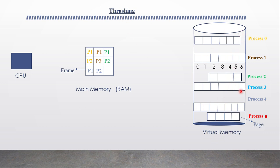Here we can see our virtual memory, main memory, and CPU. From process P0, two pages are brought — P1 and P2. We can see from the color that process P0 is yellow in virtual memory. P1 and P2 are not processes; they are pages — page P1 and page P2 — which belong to process P0. Similarly, two pages of process P1 and two pages of process P2 and so on are present in main memory.